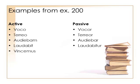VINCEMUS — we are conquering. So we've changed from first singular to first plural. And in this case, we're going to replace the S with our friend, the R: VINCEMUR. We are conquering becomes we are being conquered.